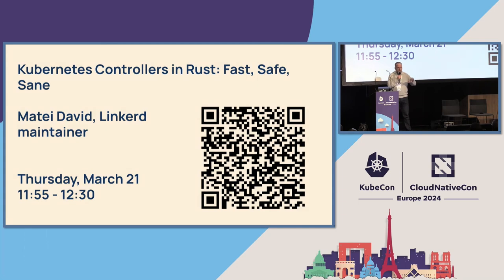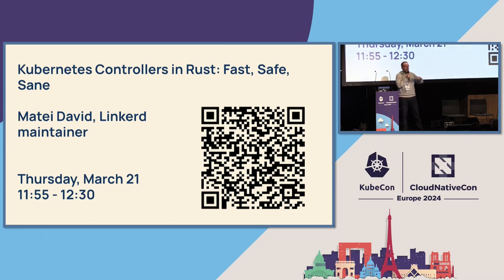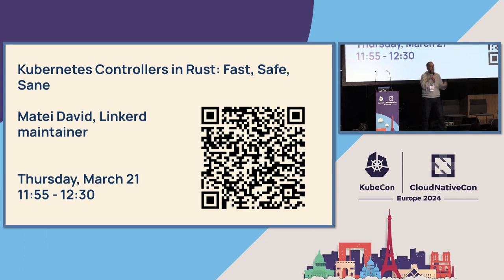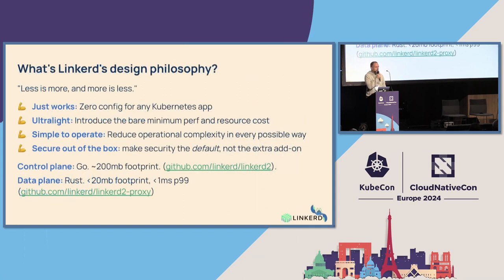One talk happening at this conference I want to call out: we've started to introduce Rust in the control plane as well. That's more interesting because the control plane has to interact with the Kubernetes API. The proxies themselves are totally independent of Kubernetes — they only talk to the Linkerd API and are not general-purpose proxies like Envoy or Nginx. Matei, one of our Linkerd maintainers, will be talking about that work tomorrow — it's been fast, safe, and sane, apparently.